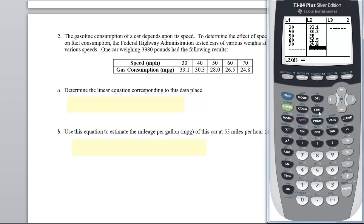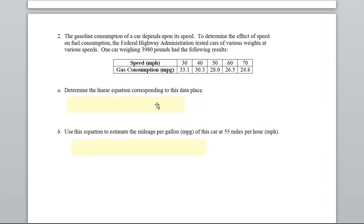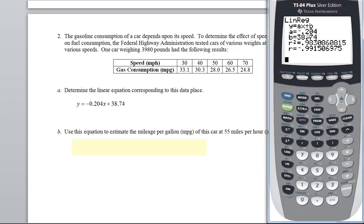And we've got to go find the linear equation. So stat, over to calc, number 4, enter. So it looks like because this is a negative, I've got a negative slope. So the faster you go, the worse your miles per gallon.